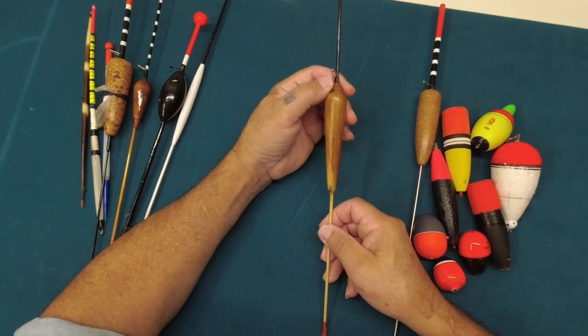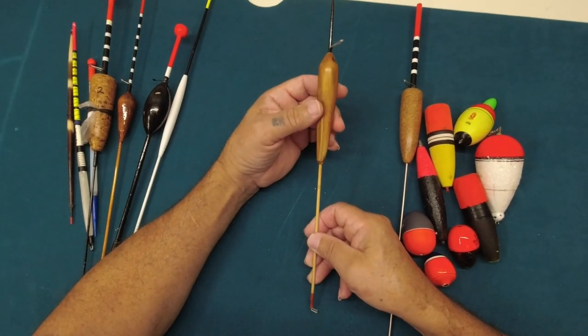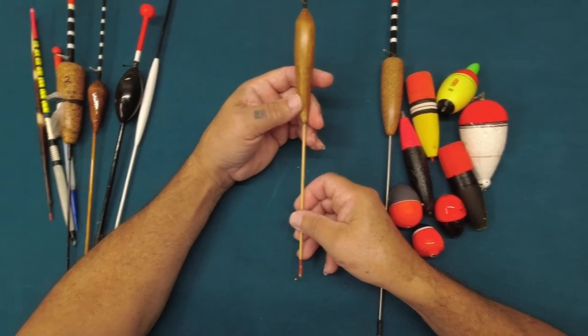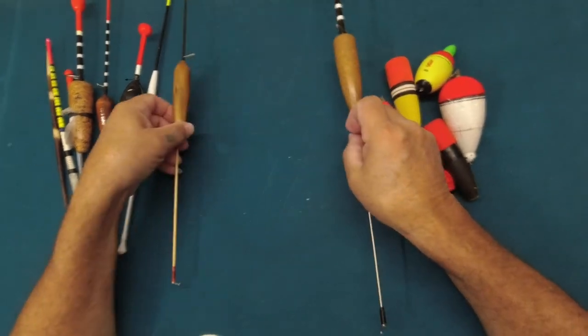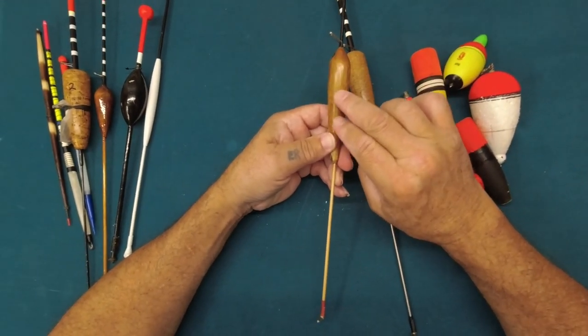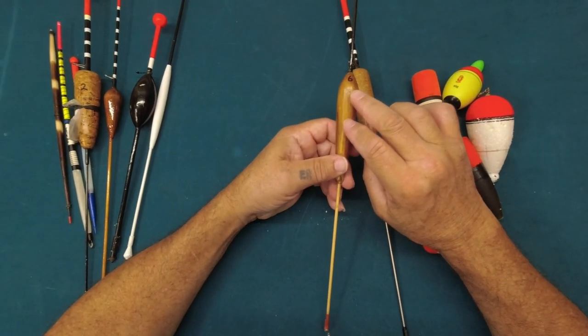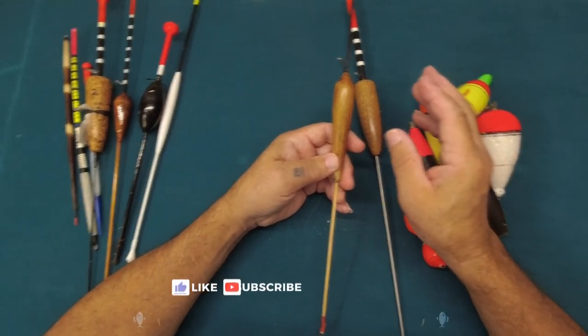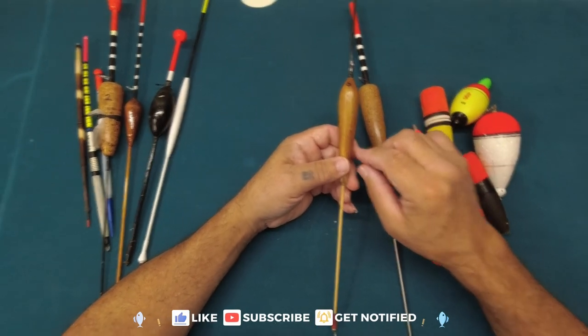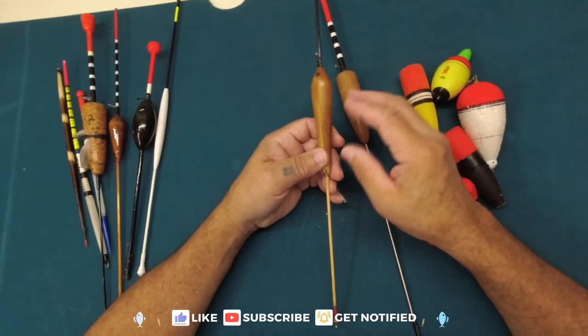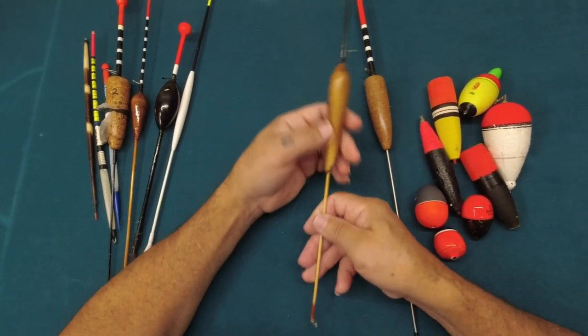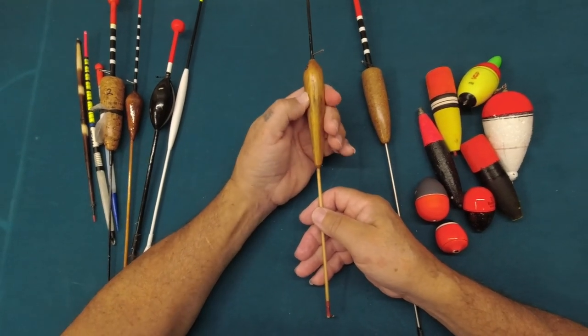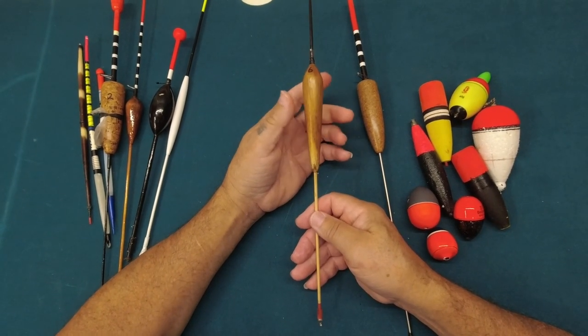This one here is also a blackfish float which I use in the channel. It's also numbered with corresponding weights. It's made out of what's called a black boy. I don't know the scientific name, but those black boys that grow in the bush, the stem dries out and falls to the ground. Grab it, shape it to what you want and it makes a great float. The old timers told me about this one. It's really hard and very buoyant.